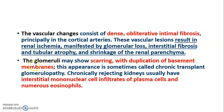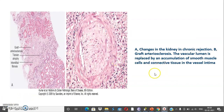When glomeruli are scarred, there is duplication of basement membranes. Chronically rejecting kidneys usually show an interstitial mononuclear cell infiltrate of plasma cells and numerous eosinophils. The microphotographs show changes in chronic rejection: photograph A shows tubular atrophy, interstitial fibrosis, and arteriosclerosis. In microphotograph 2, the vascular lumen is replaced by accumulation of smooth muscle cells and connective tissue.